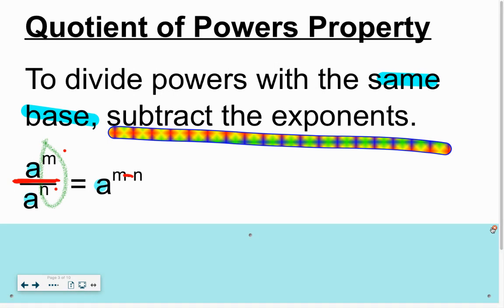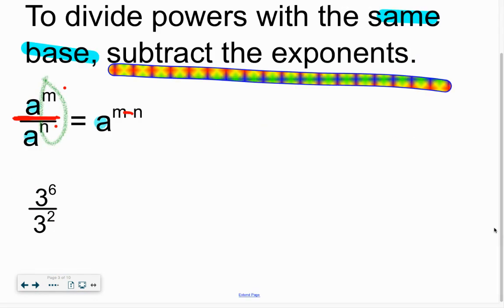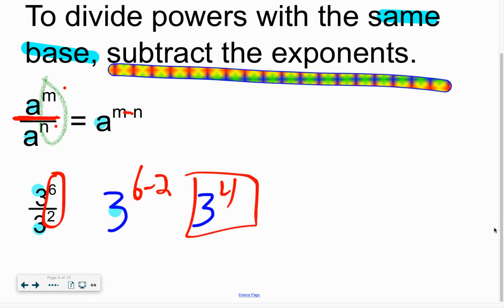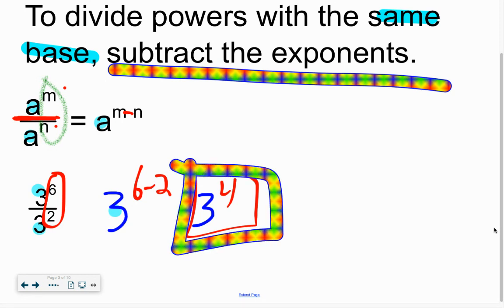Example 1 down here. When they have that same base, just keep it. So since it's got a base of 3, write down the 3 and now subtract those. You can show me the work if you want to, that 6 minus 2. But you can jump right to the answer, which is 3 to the 4th power. If it says to evaluate, give it to me that way. Otherwise, this is how we're going to find our answers most of the time, writing it as a power.